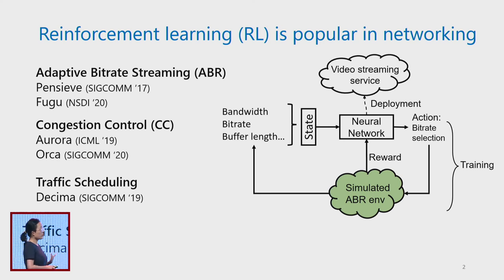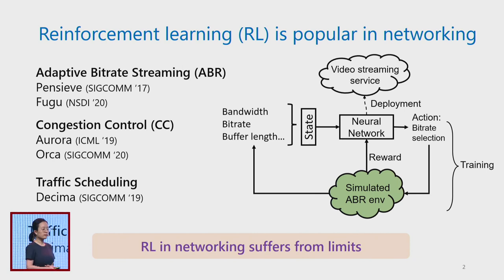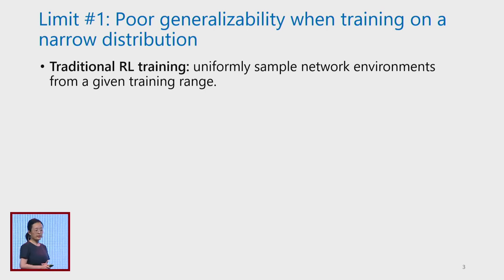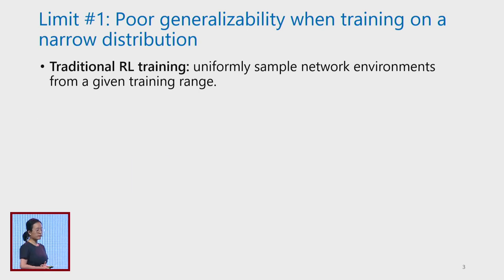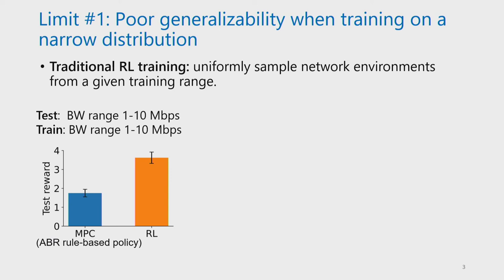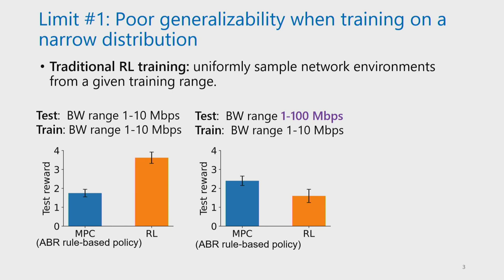Even though there are many RL-based approaches in networking, they still suffer from some limits. The first limit is that RL has poor generalizability when trained on a narrow distribution. Following traditional RL training, we uniformly sample network environments from a given training range. In the ABR system, when testing range and training range are the same, the trained RL model performs much better than MPC, a rule-based policy. However, when the testing range is 10 times bigger than the training range, RL performance becomes much worse than the MPC baseline.